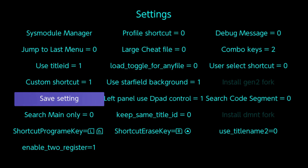Highlight any button then push ZL plus L. Since max keys is set to 2, push any 2 buttons for the button shortcut. To change to a different button combination, repeat the same process.